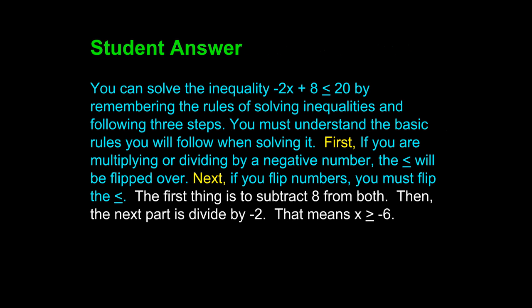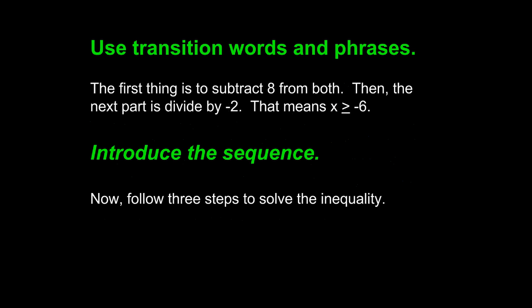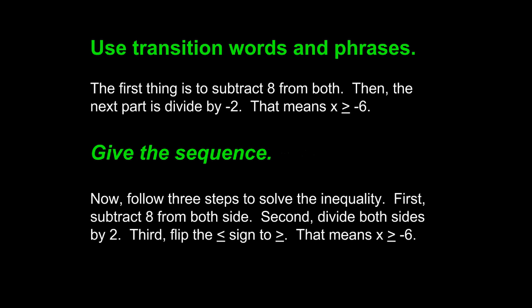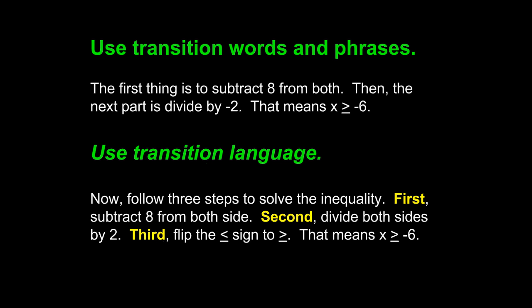Simple words like 'first' and 'next' improve this paragraph. 'You must understand the basic rules you will follow when solving it. First' — that indicates this is the first rule. 'Next' — that indicates you are talking about the second rule. The reader and your math teacher both understand how each sentence develops a separate rule. Transition language helps to organize ideas. We can also use transition words for the step-by-step sequence at the end of the paragraph, introducing it with an additional sentence. I have included the word 'now' and the sentence 'follow three steps to solve the inequality' to introduce that sequence. Now we give the sequence with transition language — first, second, and third — to give each step.